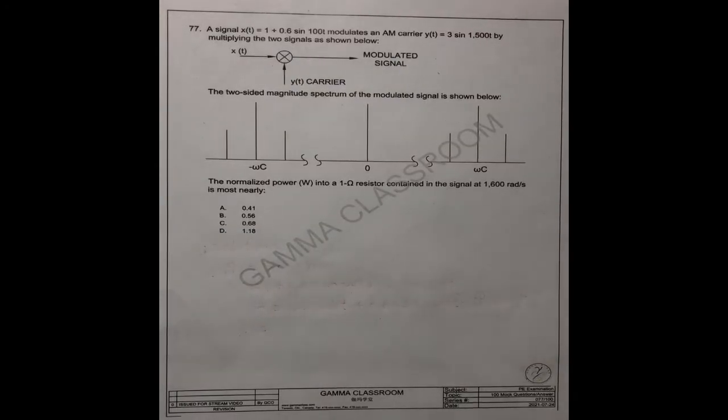Question number 77. A signal x(t) = 1 + 0.6sin(100t) modulates an AM (amplitude modulation) carrier y(t) = 3sin(1500t) by multiplying the two signals as shown below.